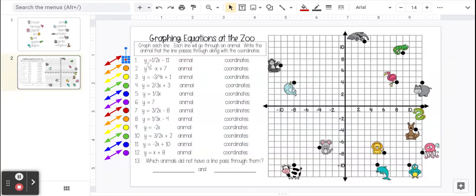For this activity, you're going to first graph the line, figure out which animal the line goes through, and then list the coordinates of the animal. So for the first one, we have y equals one-half x minus 11. We're going to start at the end of the equation with that minus 11. That is our y-intercept. So we're going to put this first point here on the y-axis at negative 11.